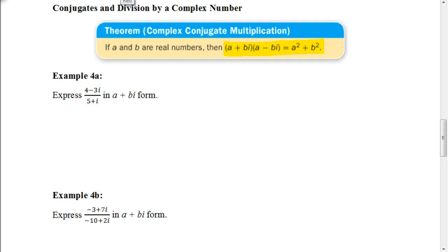So for example, with this one here, where we have 4 minus 3I in the numerator and 5 plus I in the denominator, we're going to take the conjugate of the denominator, which would be 5 minus I, and multiply both the numerator and denominator by that value, 5 minus I.